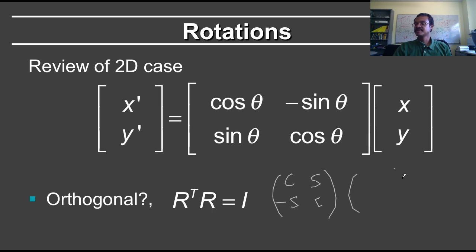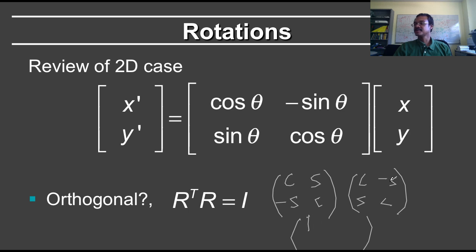And I have to multiply this by cos, minus sine, sine, cos. Notice what happens: cos times cos is cos squared, sine times sine is sine squared, and cos squared plus sine squared equals 1, so this is just 1. Cos times minus sine is minus sine cos, and sine times cos is sine cos, so this equals 0.